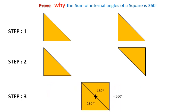The sum of angles of two triangles is 180 plus 180, which equals 360. By this way, we have proved that the sum of a square's internal angles is 360 degrees. Thank you for watching this video.